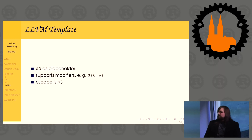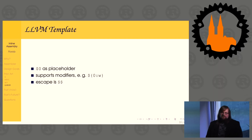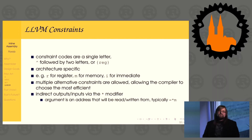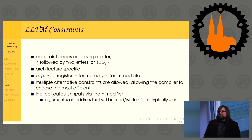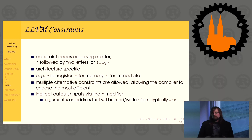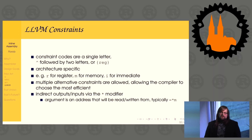LLVM IR supports modifiers similar to GCC: the syntax is dollar sign, then in curly braces the number, a colon, and the modifier. Escaping is done by doubling the character — dollar dollar. Constraint codes in LLVM are similar to GCC, with single-letter codes, plus a circumflex followed by two letters, and register names in curly braces. R, M, and I are available across architectures. You can specify multiple alternative constraints just like in GCC. There's also an indirect output — a star modifier — which gives you a register containing the address of memory rather than a memory operand directly.